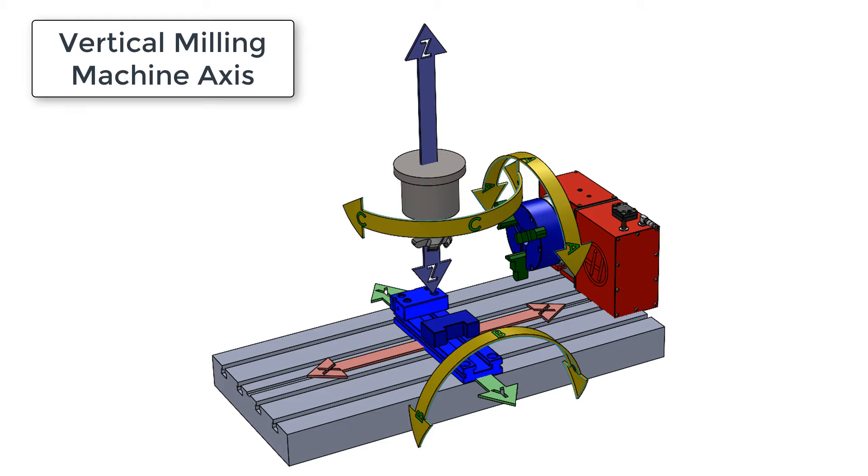There are three primary linear axes to any milling machine. The x-axis is shown here in red, the y is shown in green, and the z is shown in blue.